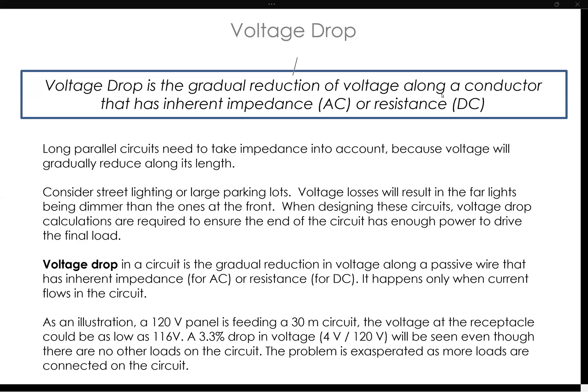Let's talk about voltage drop. Voltage drop is the gradual reduction of voltage along a conductor that has inherent impedance in an AC circuit, or resistance in a DC circuit. So if you think about really long parallel circuits, you have to take that impedance or resistance into account, because the voltage is actually going to gradually reduce along its length.